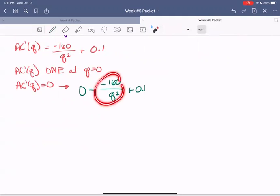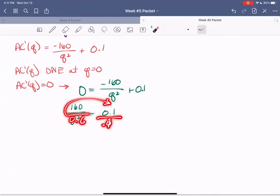Solving for Q, we can move this term over to the left-hand side. So the negative becomes positive. So we get 160 over Q squared equals 0.1. So now we can multiply both sides by Q squared to get out of the denominator and then divide both sides by 0.1 to cancel out that 0.1.